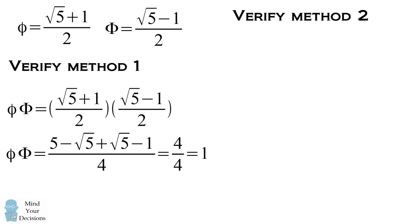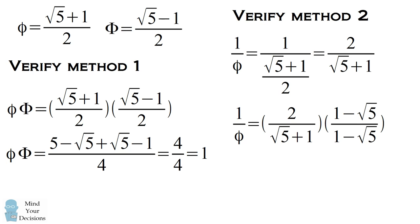Another way you could verify this is by taking the reciprocal of phi, then rationalizing the denominator, and if you do a little bit of algebra, you'll find you get to the capital Greek letter phi, which is the square root of five minus one over two.